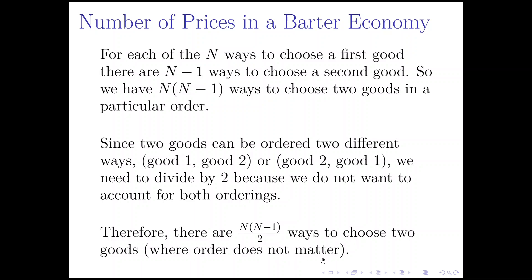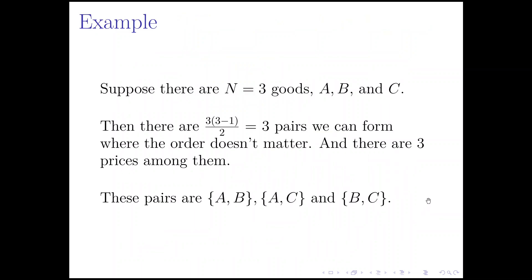That's equal to the number of prices in this barter economy. Let's do an illustrative example. Let's say N equals three, so there are three goods in the economy. Plugging N equals three into the formula, we get three times (three minus one) divided by two — so three times two divided by two — they cancel, and we're left with three. So there are three pairs we can form where the order doesn't matter, meaning three prices among the three goods.